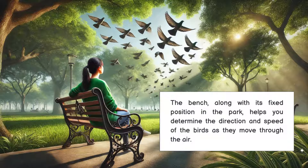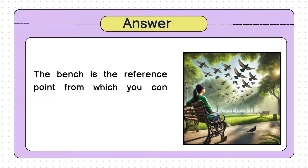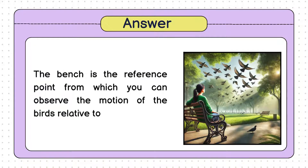Understanding this helps clarify why the birds might seem to be moving faster or slower, depending on their direction and your perspective. Does that make sense? Let me know in the comments below if you have other examples or questions about reference points.